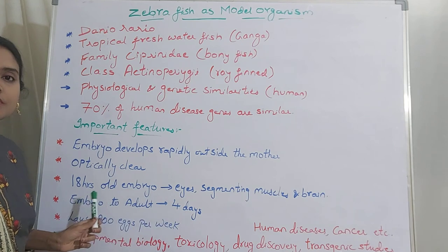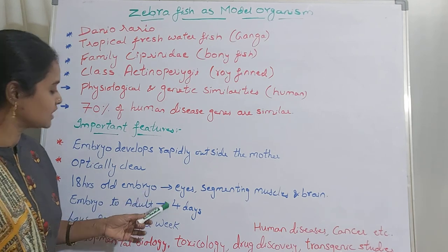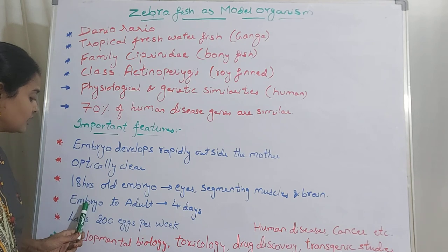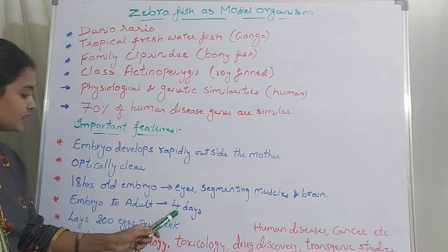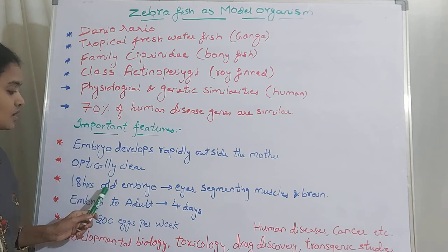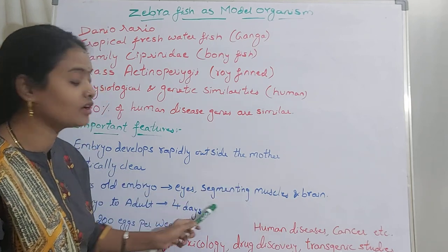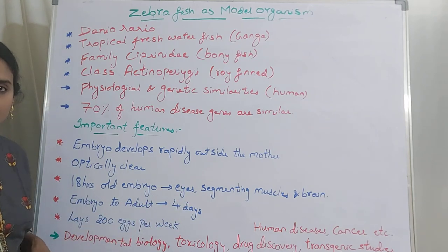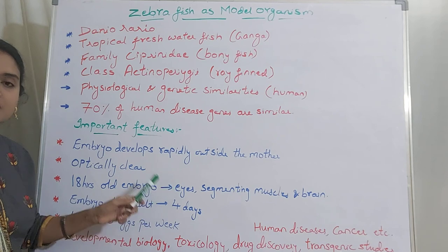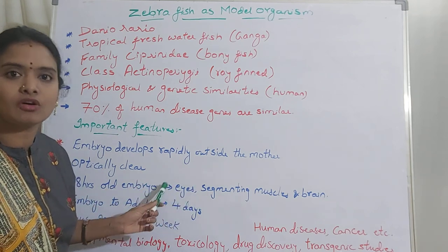You can observe the complete anatomy of the organism without any damage. Zebrafish develop very fast — within 4 days the embryo develops into a complete adult. Their lifespan is nearly 3 years, or up to 5 years under laboratory conditions. Notably, an 18-hour-old embryo has already developed eyes, segmenting muscles, and a brain, providing direct access for observing internal development.